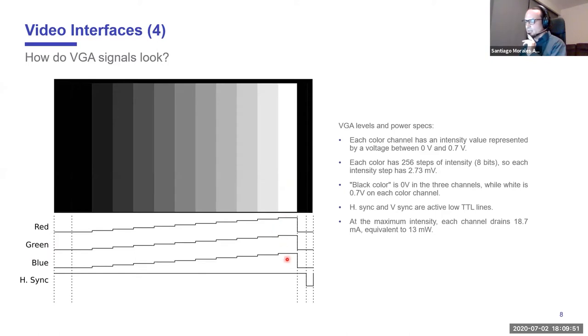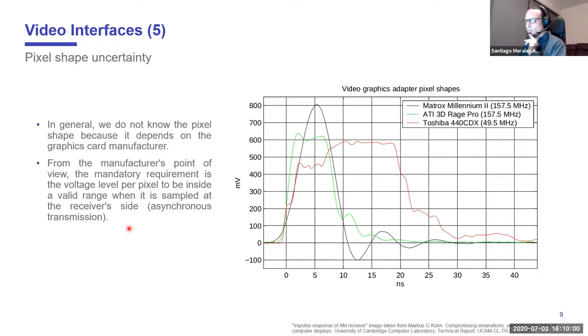Here we can see what is happening when we are transmitting a gray scale from black to white. For example, in white we have the three channels going to the top of 0.7 volts. But in reality, this is very idealized. We will never achieve these square shapes of the signals. Every pixel has different forms, and the pixel shape is something we normally don't know. For example, here we have two manufacturers of different graphic cards transmitting at the same frequency and resolution with the same information, but the pixel shape is really different.